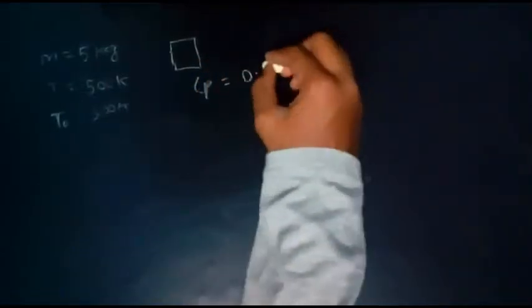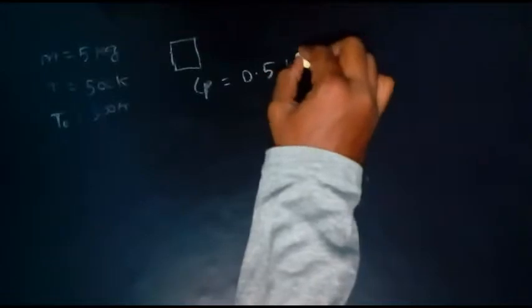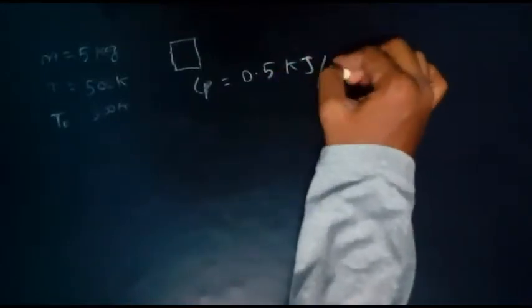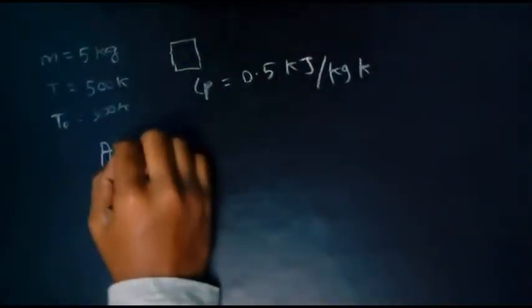The specific heat of steel is Cp. They are given the Cp value as 0.5 kilojoule per kg K. Calculate the available energy of the block, so we need to find the available energy.